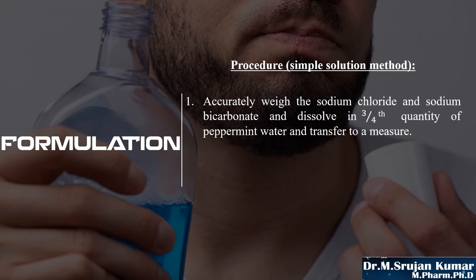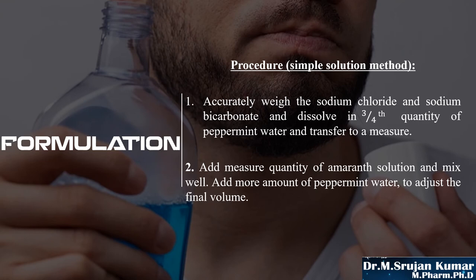In step 1, accurately weigh sodium chloride and sodium bicarbonate and dissolve in three-quarters quantity of peppermint water, then transfer to a measuring cylinder. In step 2, add the measured quantity of amaranth solution and mix well. Then add the remaining quantity of peppermint water to adjust the final volume. This is the procedure involved in the preparation of sodium chloride mouthwash.